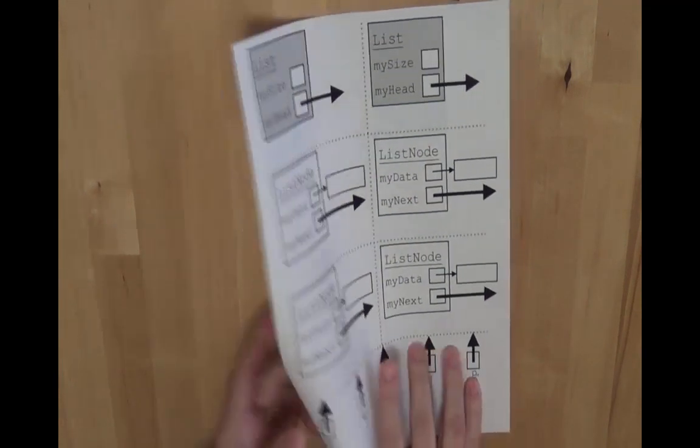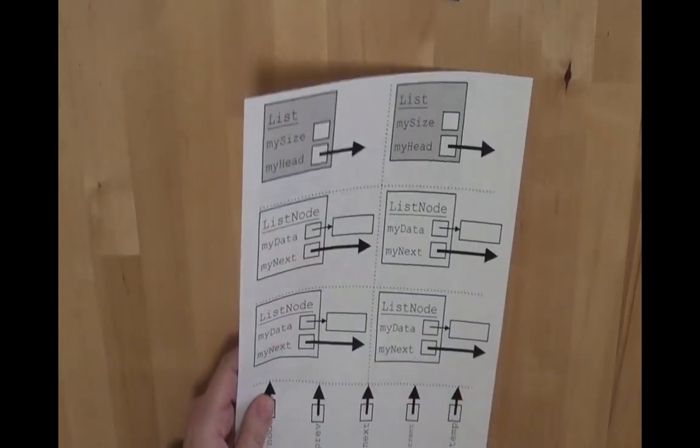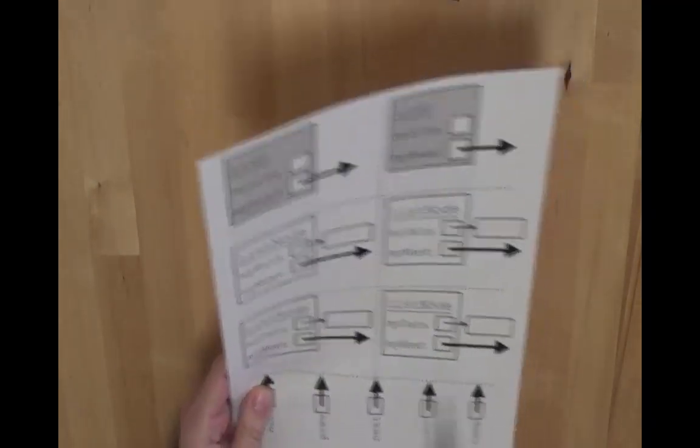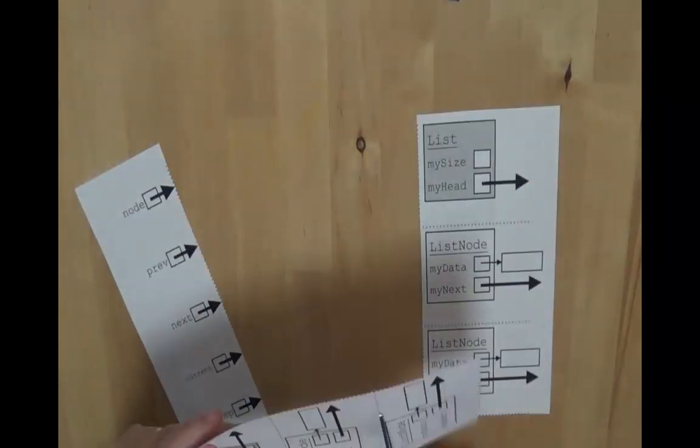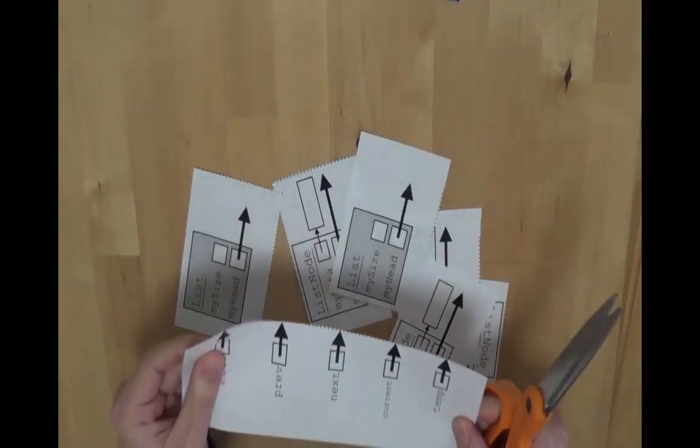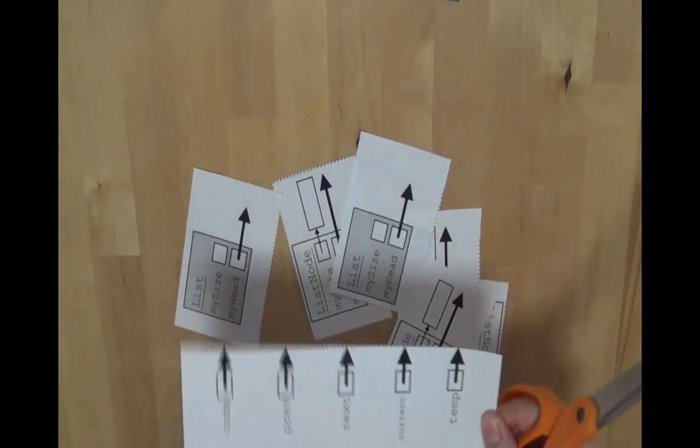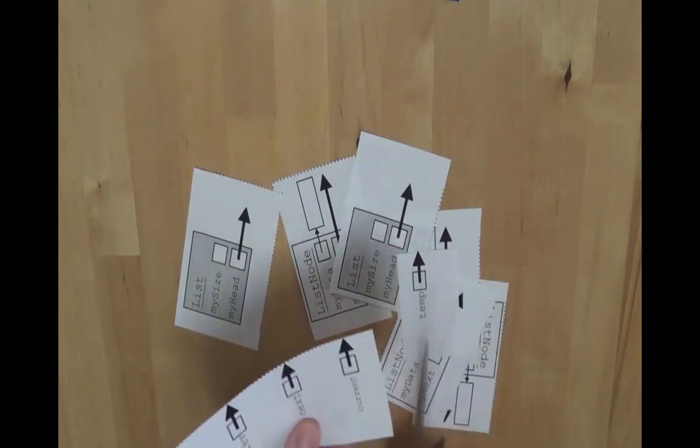Once you've got it printed double-sided, you can cut it into pieces along those dotted lines. The piece at the bottom has a bunch of different variables that we can use, and you can just cut all those apart.